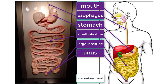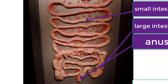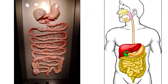Why is it called the small intestine if it is longer than the large intestine? The name comes from the diameter of the tube. The small intestine is much smaller in diameter compared to the large intestine even though it is much longer.